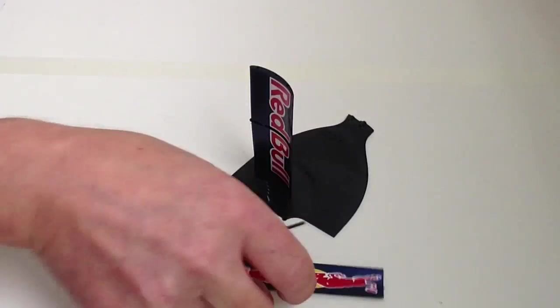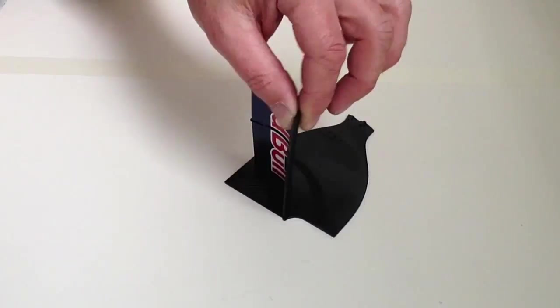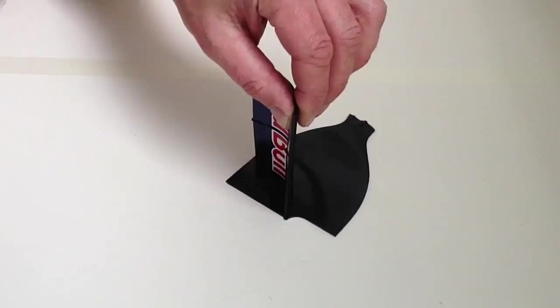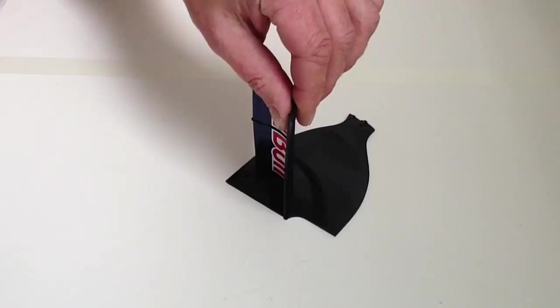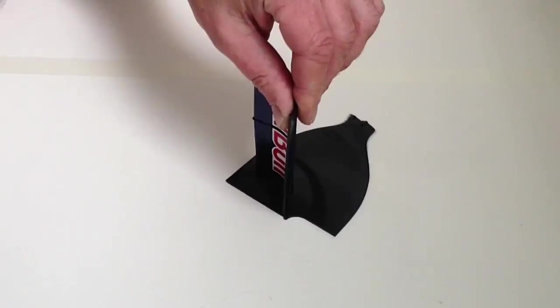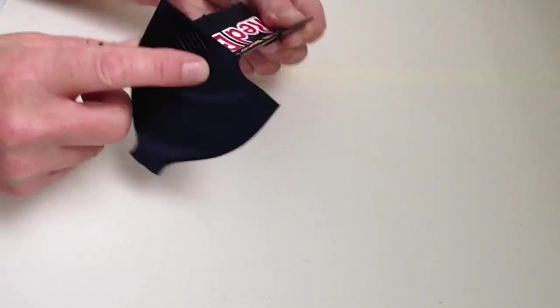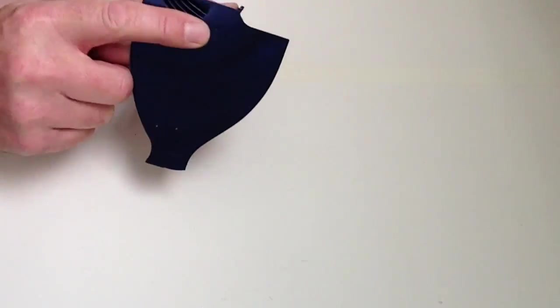Once you've done that, take the rear section of the wing. Once again, test fit where that goes. And then once again, take one of your 6mm screws and we're then going to be putting that into that hole there.